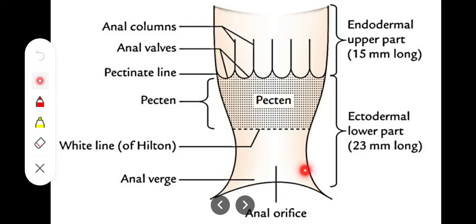The subcutaneous part, which is the lower one-third, has the same composition as normal skin. It is about 8 mm in length and is a normal skin region containing pigmented skin, sebaceous glands, sweat glands, and hair follicles.